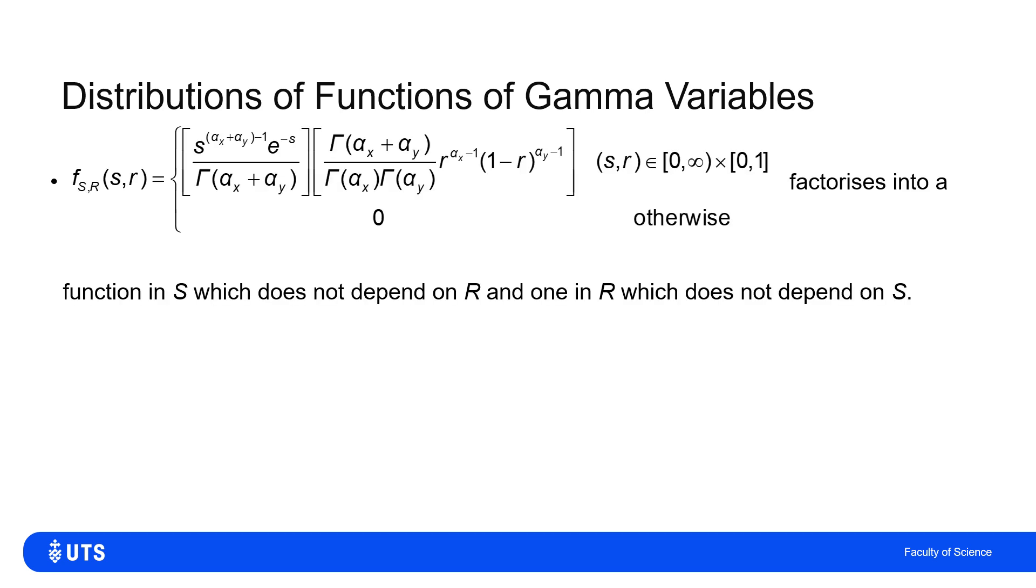The other thing to note about the fact that I have this function of S, but not R, multiplied by this function of R, but not S, where the ranges didn't even depend on each other, is that that means that these two new variables, S and R, are independent.